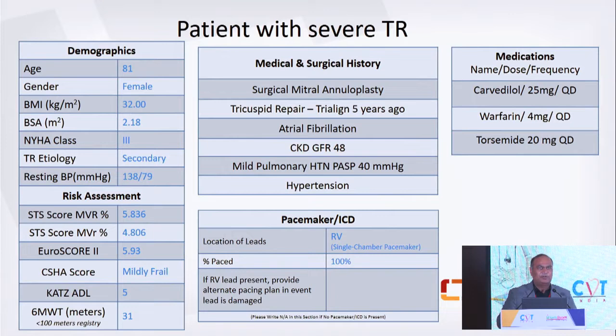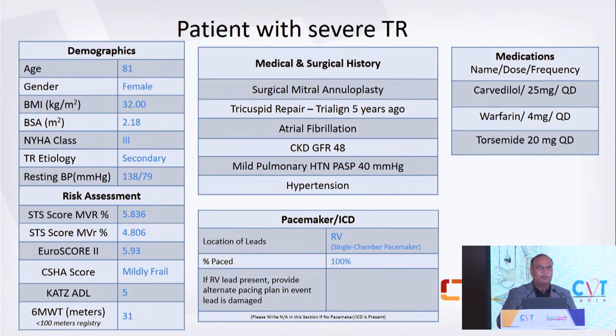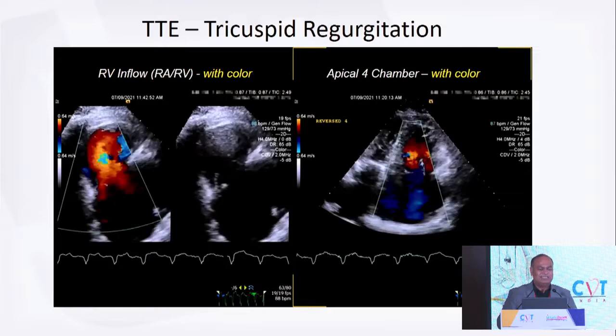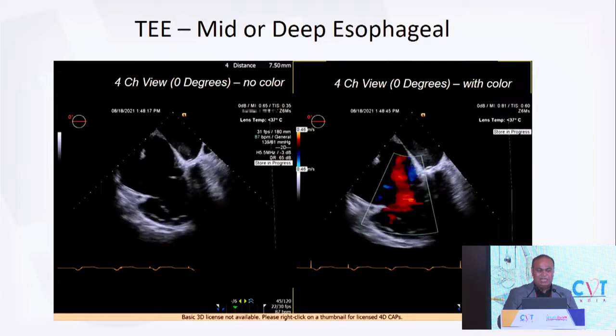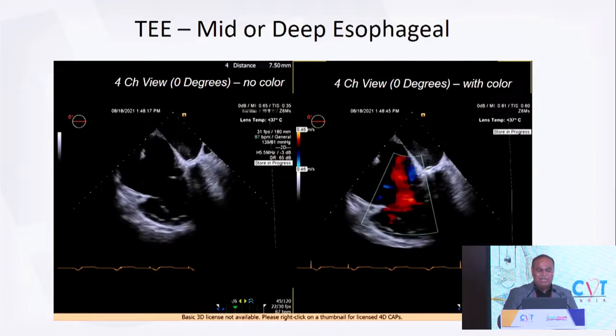A typical patient: 81-year-old female with very symptomatic severe tricuspid regurgitation, history of surgical mitral annuloplasty. A few years ago we had done TriLine on her — a suture-based cinching annuloplasty of the tricuspid valve. She did well for a few years but had recurrent TR, failed medical therapy, and had a pacemaker lead across the tricuspid valve. These are the basic transthoracic images showing severe TR. For tricuspid intervention, get familiar with TEE views.